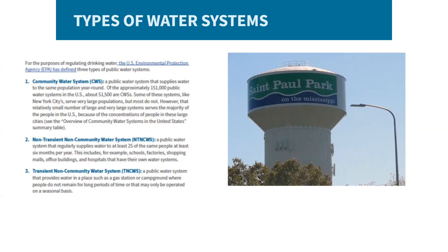For the purposes of regulating drinking water, the US EPA defines three specific types of public water systems. Community water systems are a public water system that supplies water to the same population year-round. About a third of all public water systems fall into this category, and while some serve very large populations such as New York City, the majority serve very small populations. Non-transient, non-community water systems regularly supply water to at least 25 of the same people for at least six months out of the year, and include schools, factories, shopping malls, hospitals, etc., that have their own water systems.